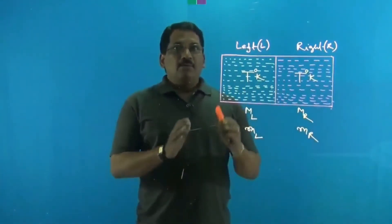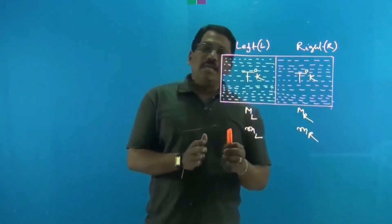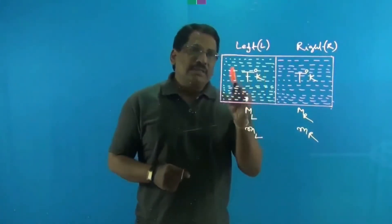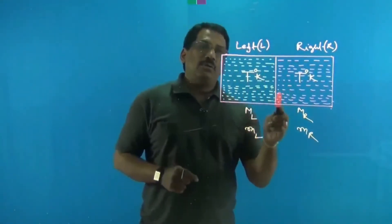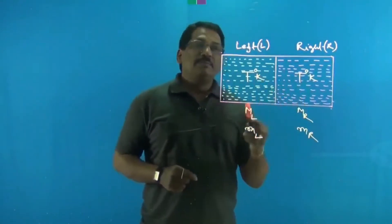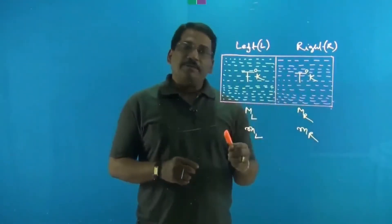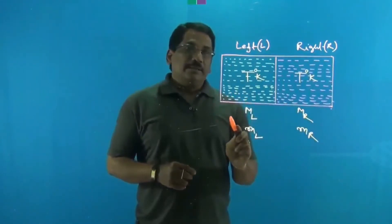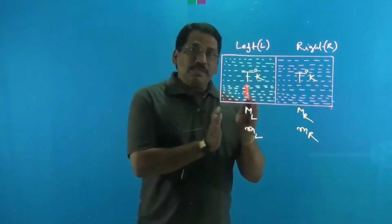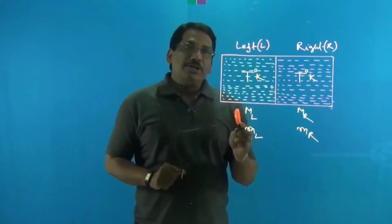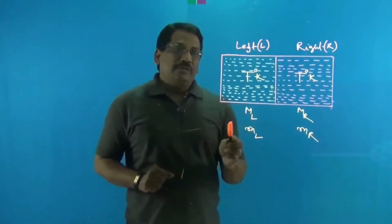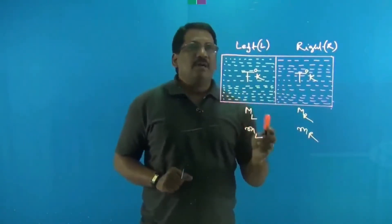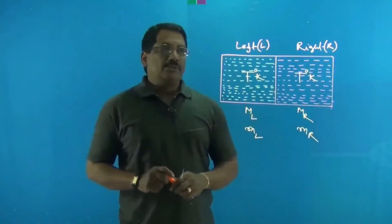Each half is at the same absolute temperature T. The given condition is that the RMS speed of the molecules in the left part equals the mean speed of the molecules in the right part. Under this condition, we are asked to find the ratio of the mass of a molecule in the left part to the mass of a molecule in the right part.